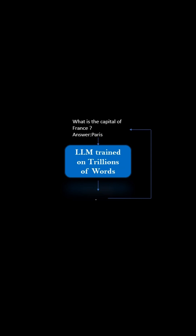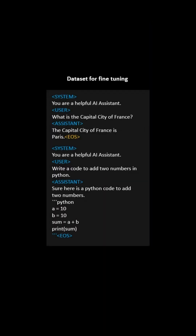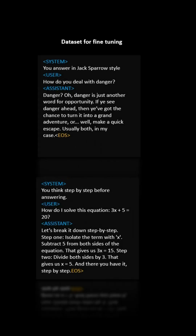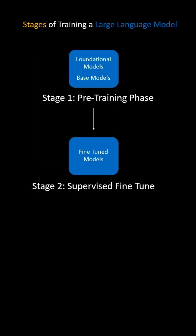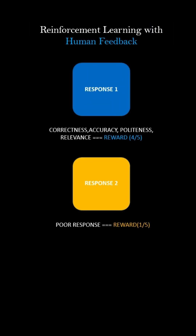The second phase is supervised fine-tuning. In this phase, the base model is trained on a carefully prepared dataset containing human-AI conversations. This dataset includes various types of instructions to follow. After fine-tuning, another stage called preference alignment takes place, where the model learns to align its responses with human needs.